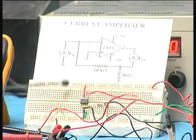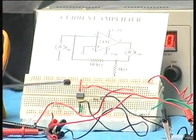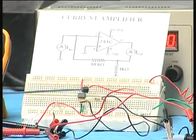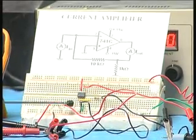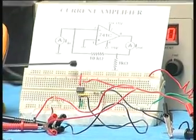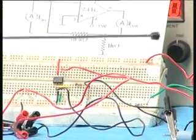This is the breadboard on which the circuit has been wired. You have the op-amp, you have the feedback loop, you have the two resistors R1. This is 1K and this is 10K, and the power supply lines are exactly similar to the simulation.